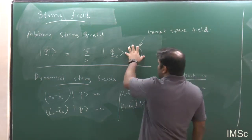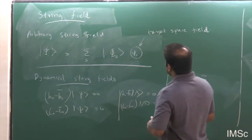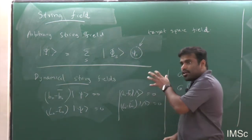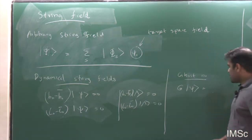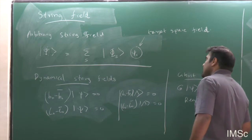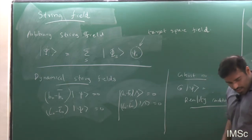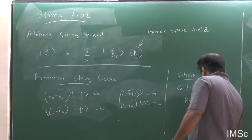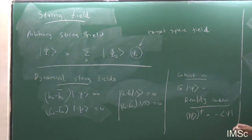The coefficient can be a complex variable. When you construct a target space field theory, if you want, say, the tachyon field to be real, you have to impose a reality condition on the string field to have a Hermitian action. The reality condition I use is: taking the Hermitian conjugate of the string field Ψ equals minus the BPC conjugate of Ψ.